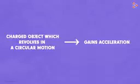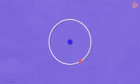We know that any charged object which revolves in a circular motion gains acceleration gradually. Similarly, if the electron is moving fast in a circular path, then it will also gain acceleration. And on gaining acceleration, it's bound to liberate energy in some form.